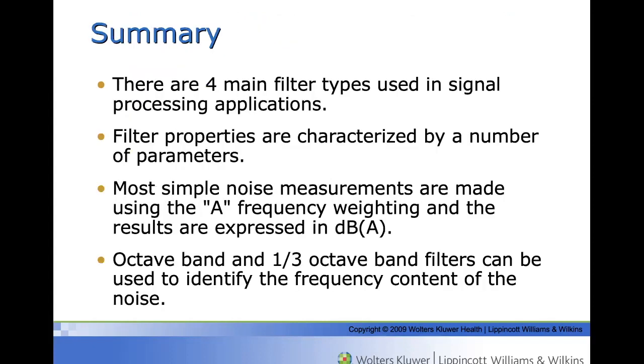In summary, there are four main filter types used in signal processing applications. Filter properties are characterized by a number of parameters. Most simple noise measurements are made using the A frequency weighting network and the results are expressed in DBA. Octave band and one-third octave band filters can be used to identify the frequency content of the noise.